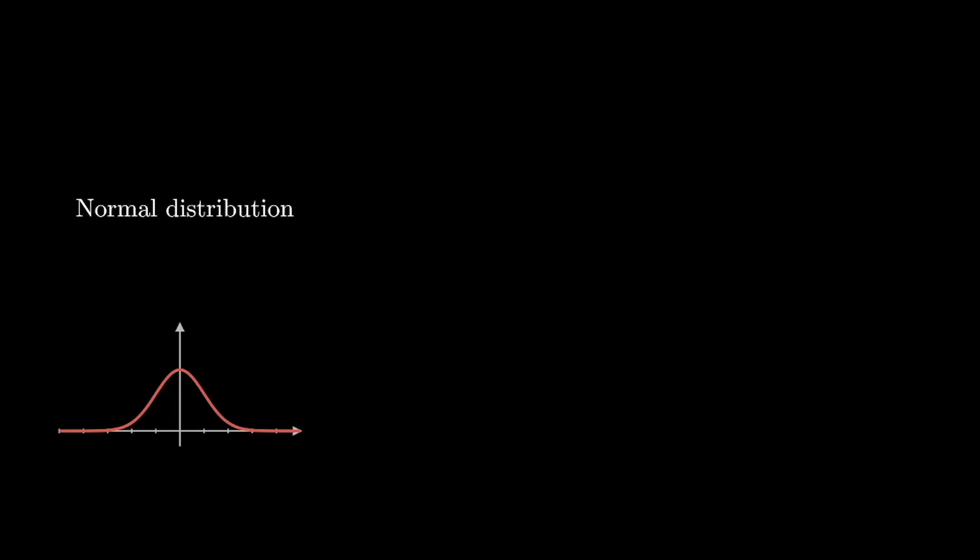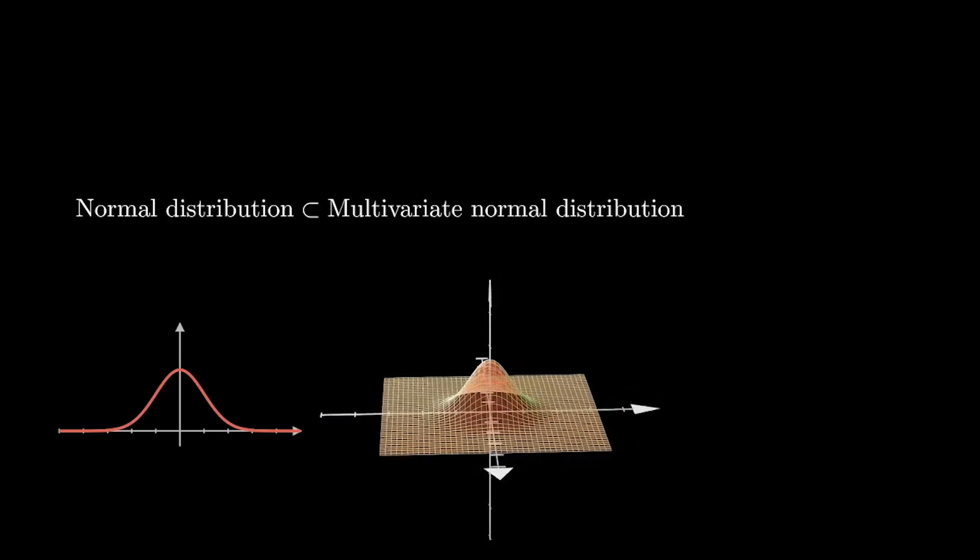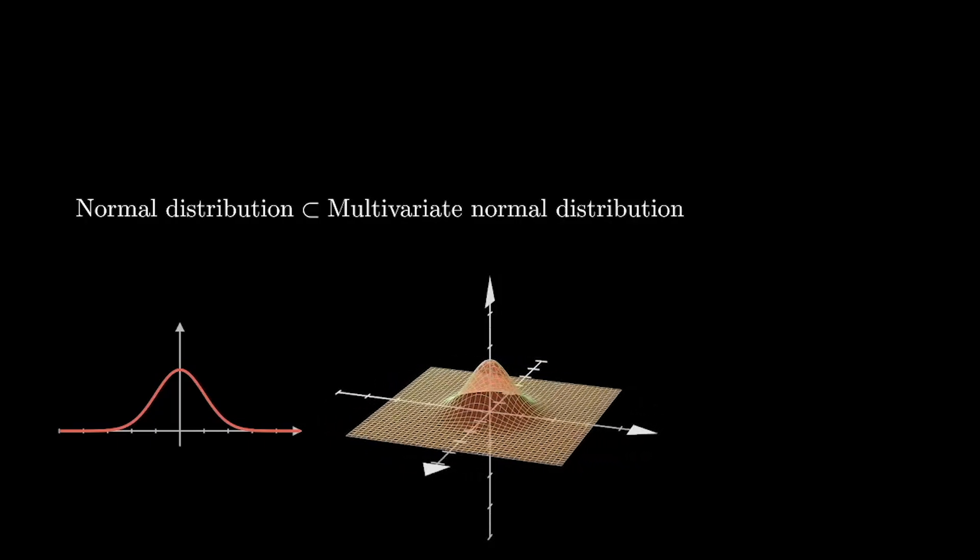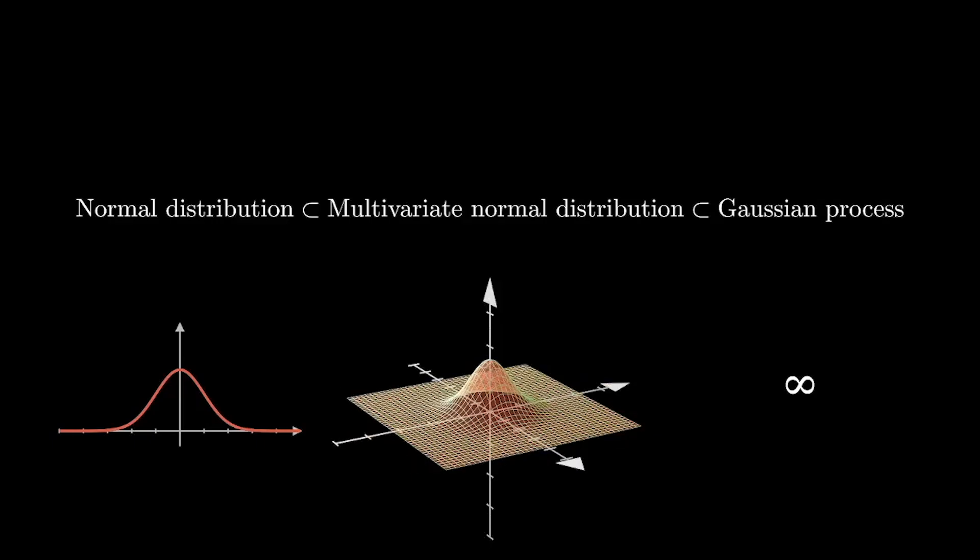Drawing a random sample from the normal distribution will give us a number distributed around its mean. We can generalize the normal distribution to sample not a number, but a vector of numbers, which is called the multivariate normal distribution. We can even more generalize to sample an infinite vector of numbers, and this will lead to the definition of Gaussian process.